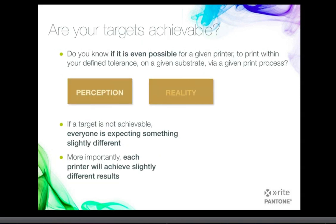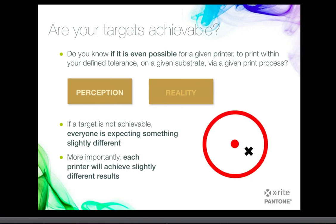Given the different processes and different substrates, are these colors actually achievable? The color name will stay the same, but when we move from one substrate to another — going from paper to film, for example — the whole dynamics change. People's perception won't necessarily change either. They'll still say they're going to Pantone 1-2-3 or Pantone 4-8-5, but what's actually achievable on that particular substrate or process will be very, very different.